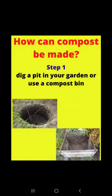Now I'll tell you how compost can be made. Step one: dig a pit in your garden or use a compost bin. As you can see in the picture, you can either dig a pit — a gaddha — in your garden to make a compost pit, or if you don't have space, you can use a large bucket, a large compost bin, or any large container as a compost bin. So the first step is to get a compost bin or dig a compost pit in your garden.